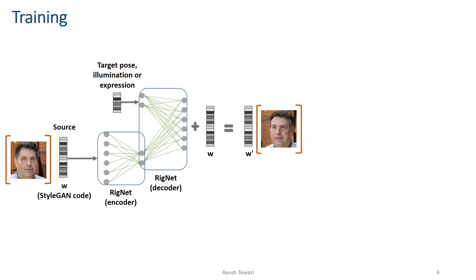Here, I will explain the training strategy taking pose as an example. We aim to enforce two properties in the output of the network. First, the face in the output should be in the target pose. Additionally, other properties such as facial identity, expressions, and illumination should be the same as in the source input.